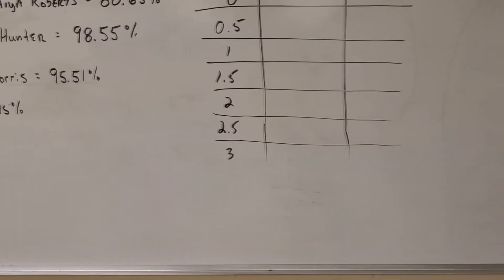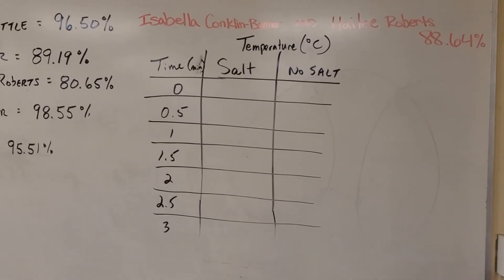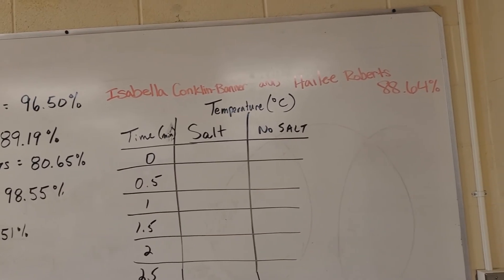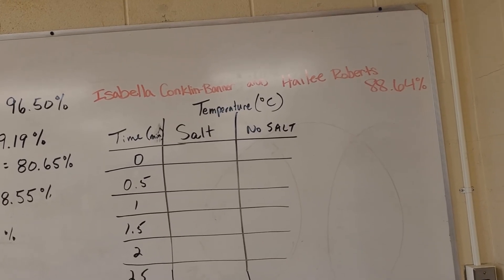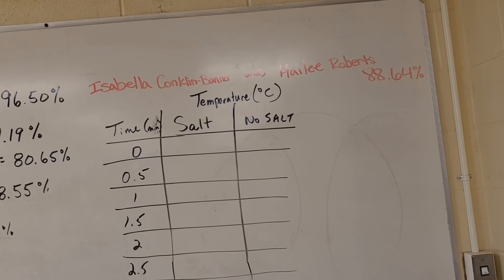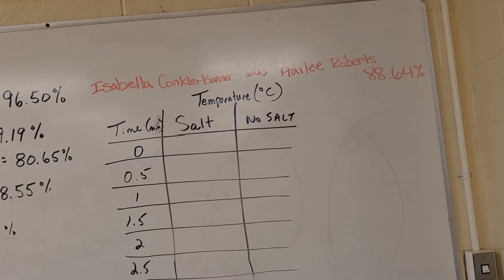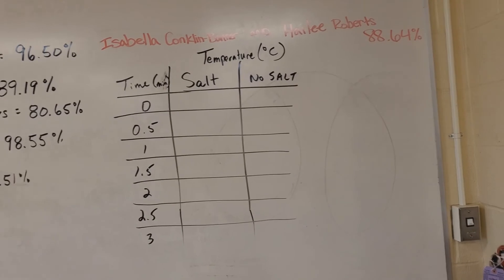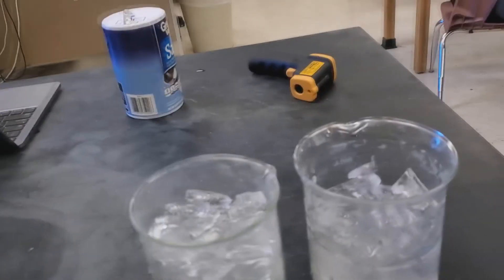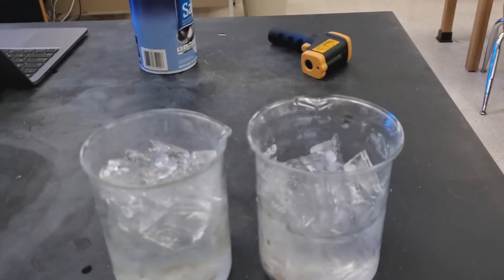Now I'm expecting the temperature of the no salt to pretty much stay the same, around zero degrees. That's my control group, right? It's the one that I kind of already know the answer to, and I'm expecting it to pretty much stay near zero. However, I'm expecting the temperature of the salted water to change. I just don't know if it's going to change immediately or if it's going to take some time. So I'm going to time it every about 30 seconds, just to see.